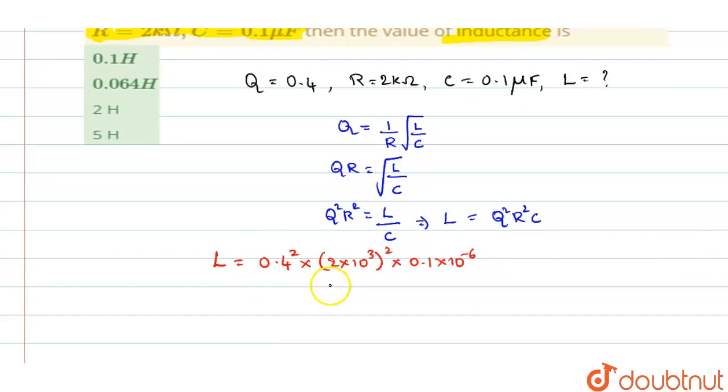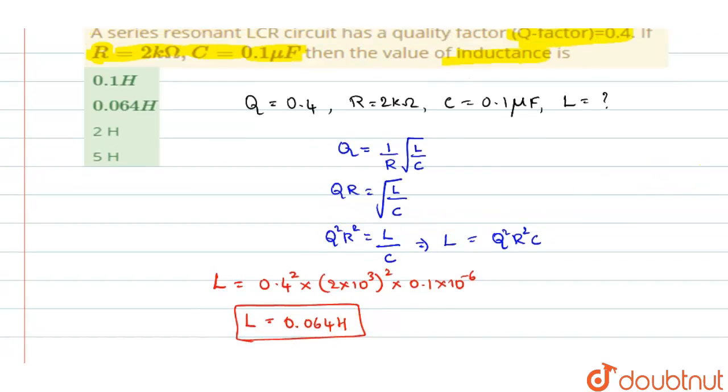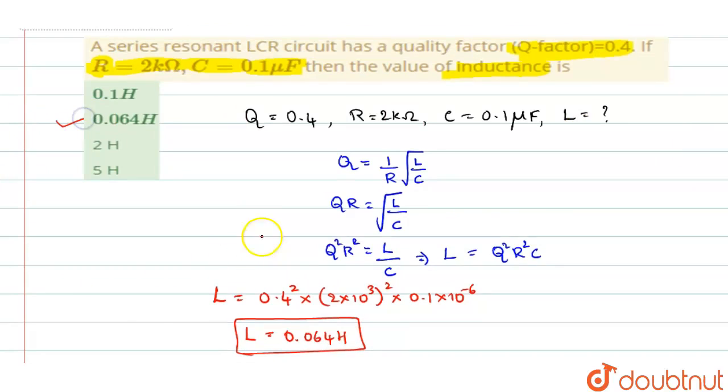And thus when you simplify this out, L comes out to be 0.064 henry or you can write it as 64 millihenry. Since the choices you are getting it is in 0.064, you will say that option B is the right answer.